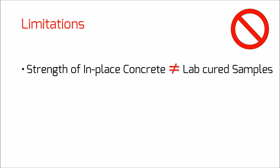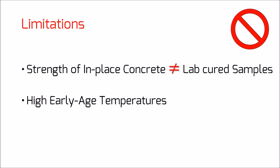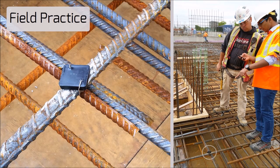While the maturity method provides an easy-to-use procedure to predict strength, it has certain limitations. The main obstacle is that cylindrical specimens used in the lab for developing maturity-to-strength relationships may not be representative of the in-place concrete, due to changes in materials, water-to-cement ratio, air content, batching method, and other factors. Another issue is dealing with high early age temperatures, which can lead to inaccurate strength estimation at later ages. A further challenge is determining a reliable datum temperature — using an unrepresentative datum temperature can result in incorrect strength estimation.